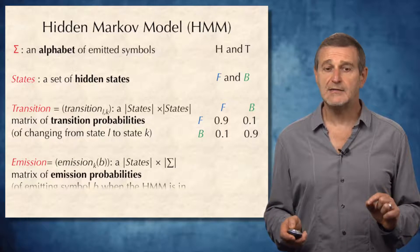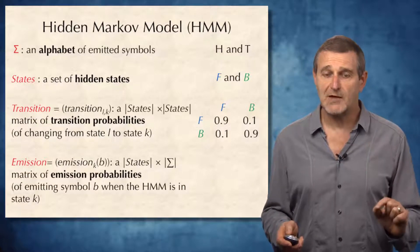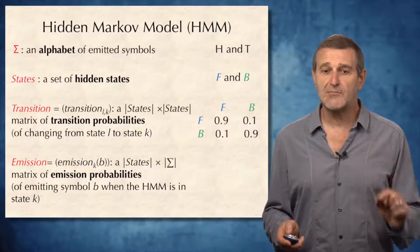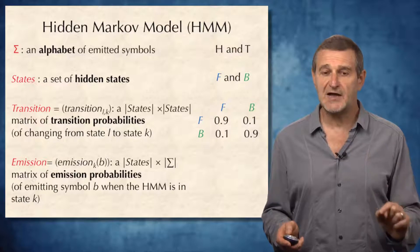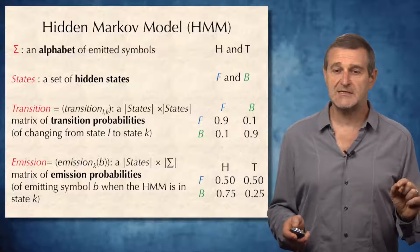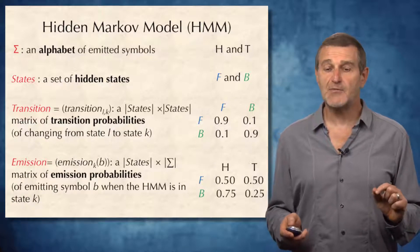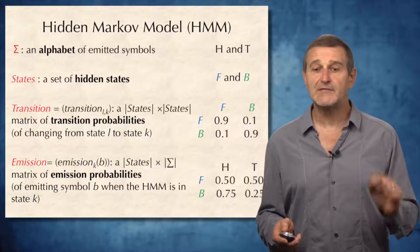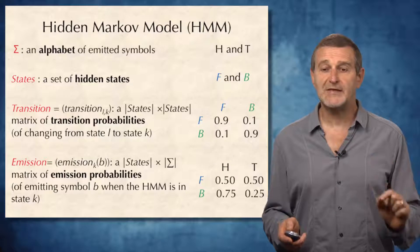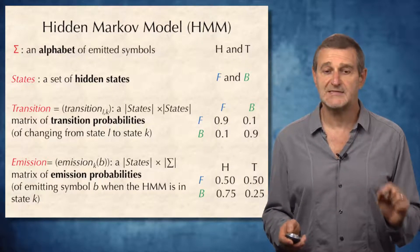Finally, the hidden Markov model is described by a matrix of emission probabilities that describes the probability of emitting symbol B when the HMM is in state K. For the crook-casino, the probability of emitting heads from the fair state is 0.5, but the probability of emitting heads from the biased state is 0.75.